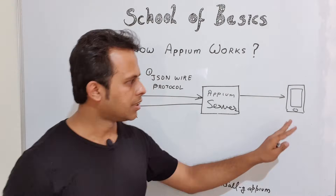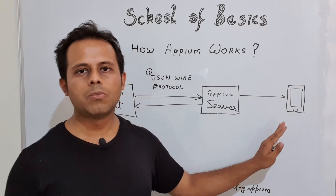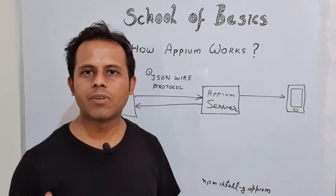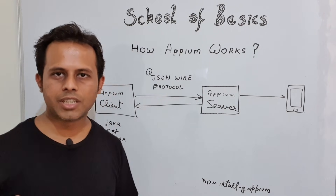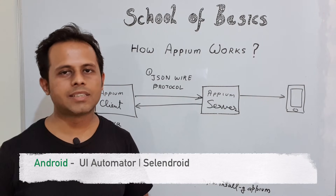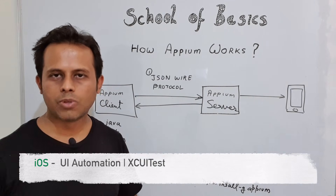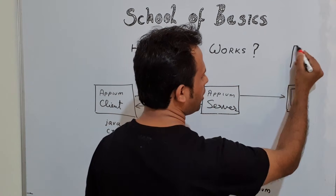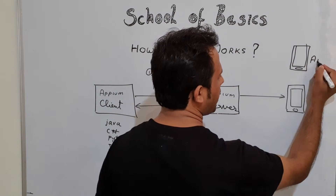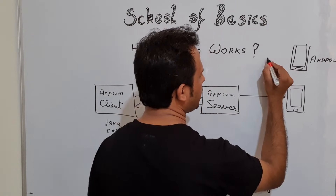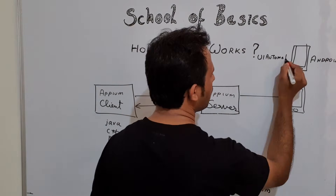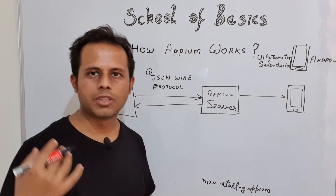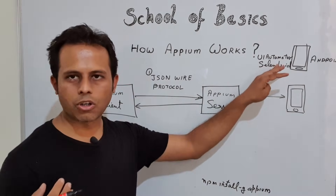The second important component is the mobile device native drivers. We can do automation on Android, iOS, or Windows, and each platform has its own native automation drivers. For Android, we have UI Automator and Selendroid. Selendroid was used in earlier Android versions, and currently UI Automator is used for Android.